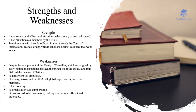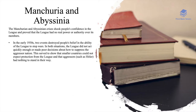However, the League did have significant weaknesses. Despite being a product of the Treaty of Versailles which was signed by every nation, most nations disliked the principles of this treaty and thus disliked the League of Nations by extension. Furthermore, the League was too ambitious — Germany, Russia and the USA, which were all global superpowers, were not members. It had no standing army and its organisation was quite cumbersome; decisions had to be unanimous, making discussions difficult and unnecessarily prolonged.